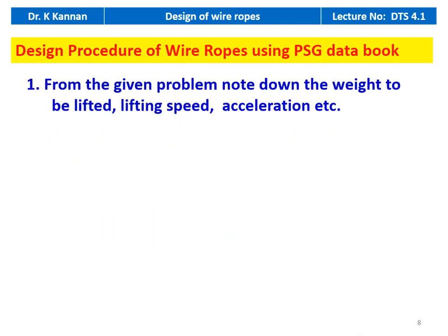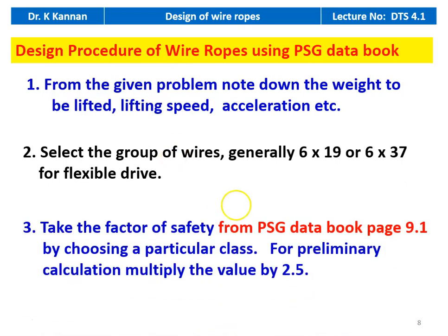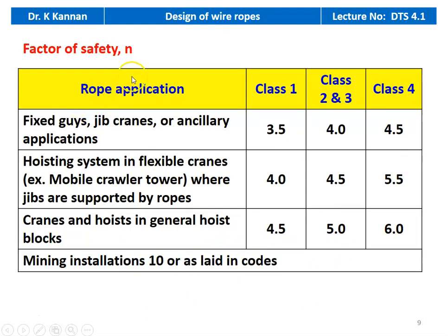From the given problem, note the weight to be lifted, lifting speed, and acceleration. Select the group of wire — generally 6 by 19 or 6 by 37 for flexible drive — and take the factor of safety from PSG data book page number 9.1, choosing the particular class. For preliminary calculation, multiply the value by 2.5, where n is the factor of safety. This table is available on page 9.1.